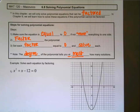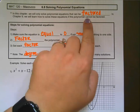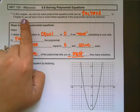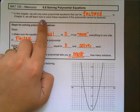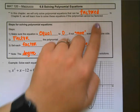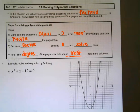In this video, we are going to talk about how to solve polynomial equations. In Chapter 6, the equations we solve by factoring are all going to be able to be factored. Then in Chapter 9, we'll learn how to solve equations that can't be factored. So in this section, we're going to focus on the ones that can be factored.